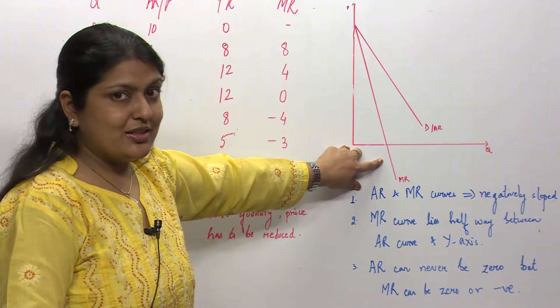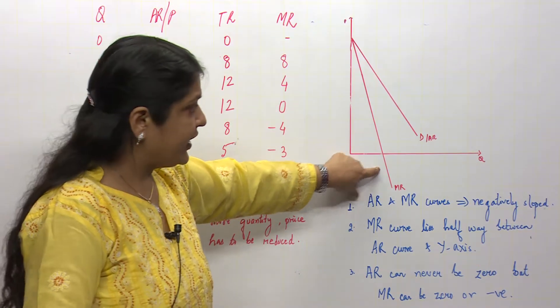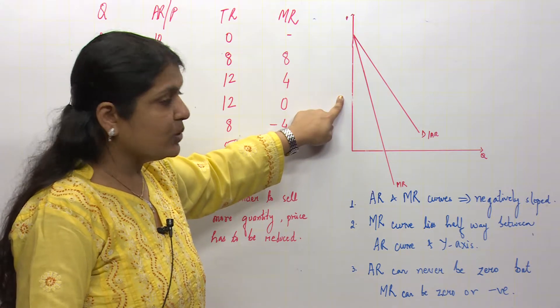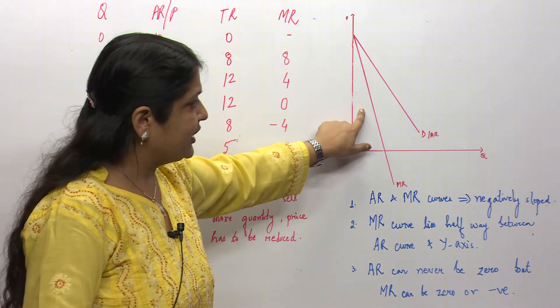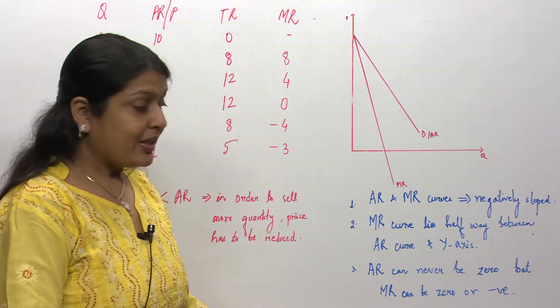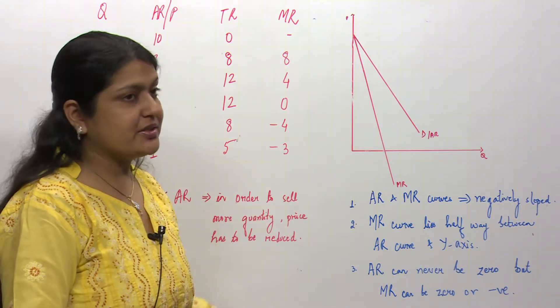The marginal revenue curve lies exactly halfway between the average revenue curve and the y-axis. This means equal parts—this area and this area are equal parts. And AR can never be zero.